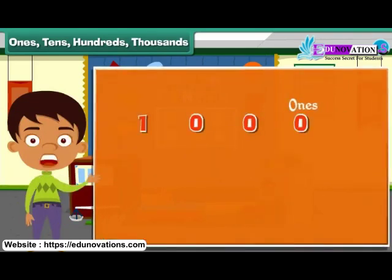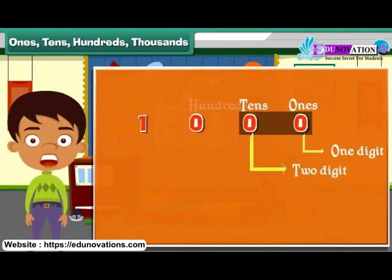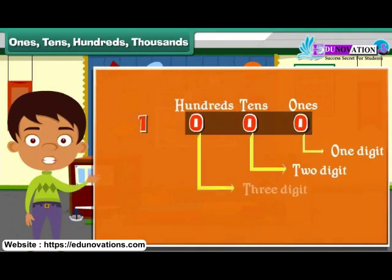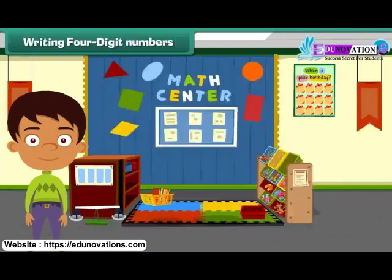Observe that in ones, we have only one digit. In tens, we have two digits. In hundreds, we have three digits. And in thousands, we have four digits. Writing four digits.